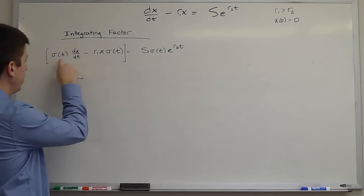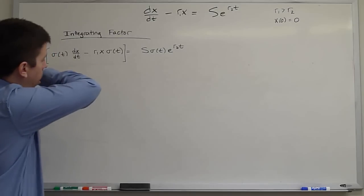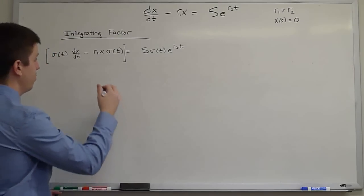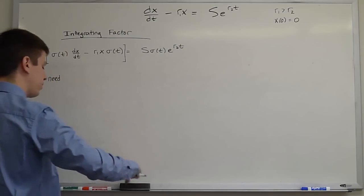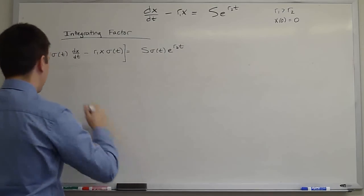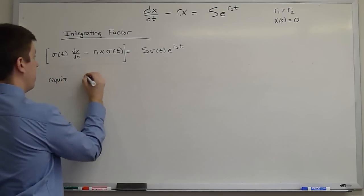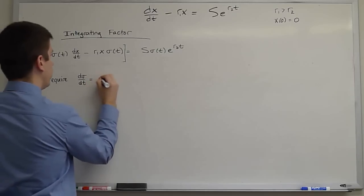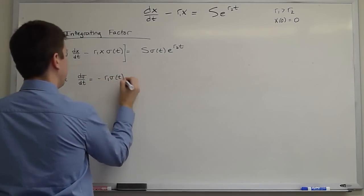So this would be the dx dt times sigma. If we want this side to be the x times d sigma dt that would come about from the product rule, we need or we require that d sigma dt equal negative r1 sigma of t.